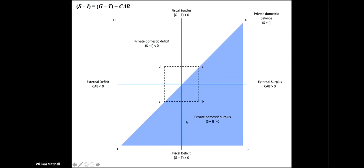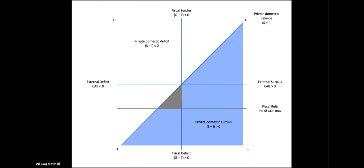The safe, sustainable position is defined by that blue triangle. If you live in the Eurozone, imposing a fiscal rule dramatically limits the sustainable space — that gray triangle — dramatically reducing the options a government has. That's a framework for understanding these things from an MMT perspective.